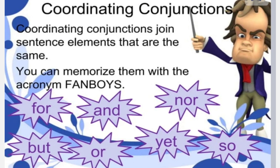The three types of conjunctions are: coordinating conjunction, subordinating conjunction, and correlative conjunction. Today we are only studying the coordinating conjunction. A coordinating conjunction joins sentences or elements that are the same. You can memorize them with the acronym FANBOYS. Coordinating conjunctions are used to combine two independent clauses.